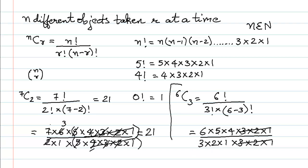After cancellation, we are left with 6 into 5 into 4 in the numerator and 3 into 2 into 1 in the denominator. We can cancel further: 3 twos are 6, so 6 cancels off. That leaves 5 into 4, which is 20. So 6C3 equals 20.